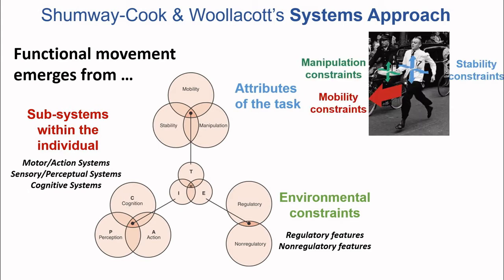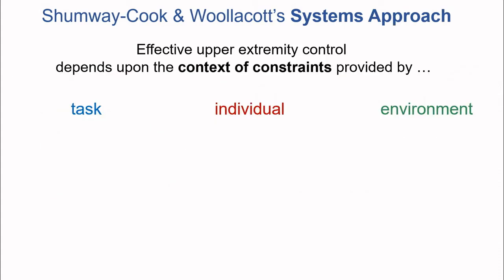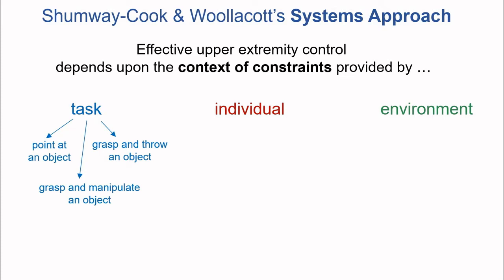Here we have an image of a man running down a street, balancing a tray with a bottle balanced on top of the tray. Performing this task effectively requires manipulating the tray in order to stop the bottle from falling off. The task demands of manipulating the tray are nested within the task demands of running down the street and maintaining the posture of the body. Effective upper extremity control depends upon the context of constraints provided by the task, individual, and environment.